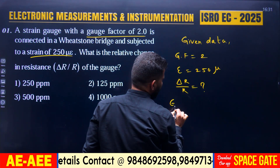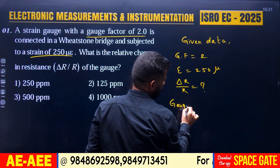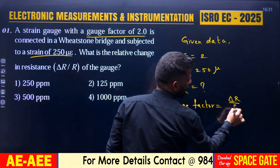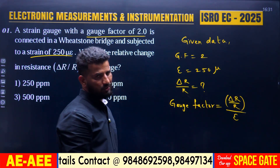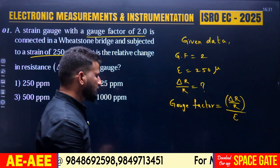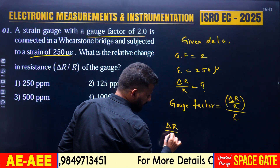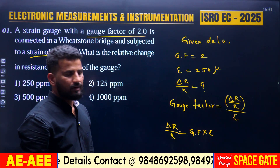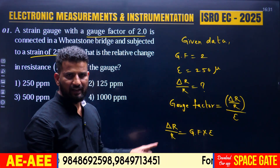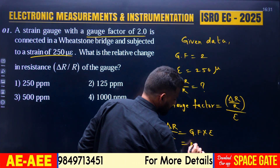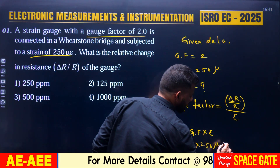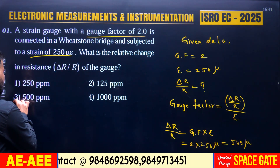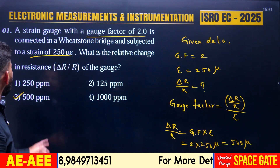The gauge factor is equal to (delta R by R) divided by the strain — that is, GF = (ΔR/R) / ε. So rearranging, delta R by R equals gauge factor into epsilon. We know the gauge factor is 2, and the strain value is 250 microstrain. Substituting: 2 × 250 microstrain = 500 microstrain, which is nothing but 500 ppm. This is the answer for this particular question.